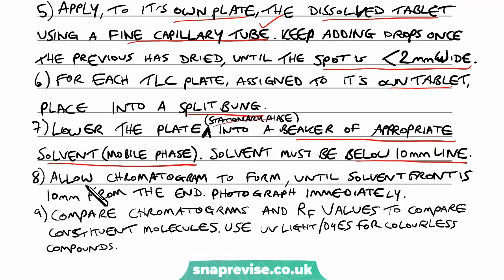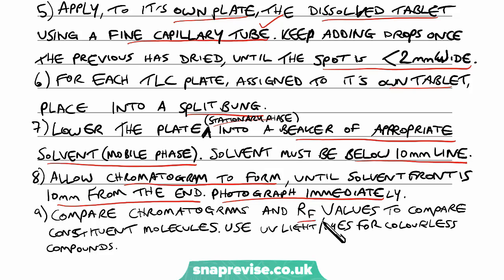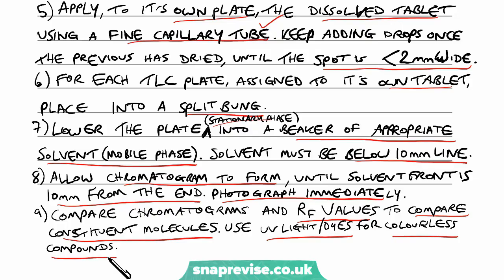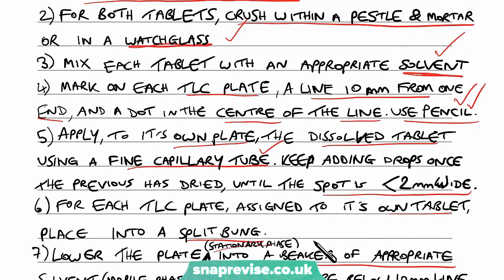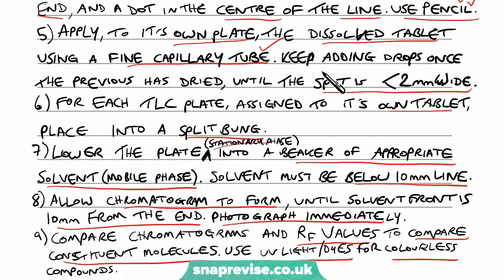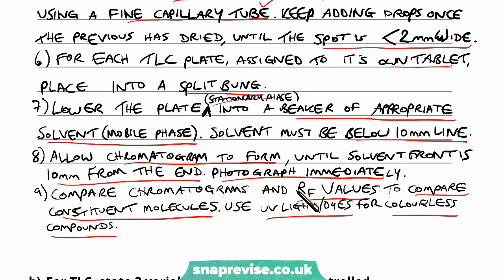Allow the chromatogram to form until the solvent front is about 10mm from the end. If it goes beyond the end, we don't know the distances for sure. Then photograph immediately, and finally compare the chromatograms and the retention factor values to compare constituent molecules. Use UV light or dyes for any colourless compounds, because some don't show up by eye. As long as you cover those main points — crushing the sample, dissolving in solvent, preparing the stationary plate, adding to the mobile phase, allowing the chromatogram to form, taking a photograph, and using RF values to compare — you should pick up those 10 marks.